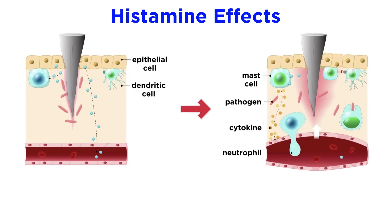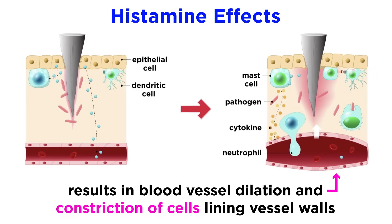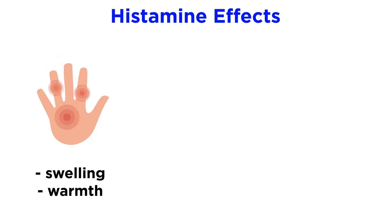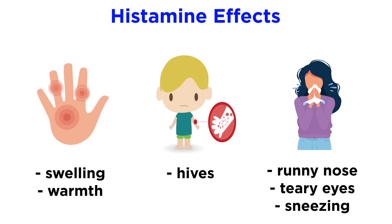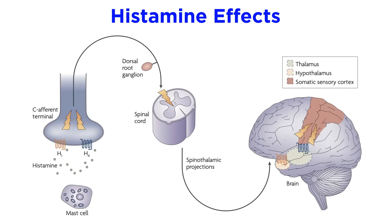Through the H1 receptor, histamine dilates blood vessels and constricts the cells lining these vessel walls, causing increased blood flow to an affected area and allowing immune cells from the blood to escape the vessels and enter inflamed tissues. This can lead to the swelling and sensation of warmth in tissues, the presence of hives in the skin, and can also cause fluid to be expelled in the sinuses, leading to a runny nose, teary eyes, and sneezing. Histamine can also act locally on nerve terminals, causing an itching or painful sensation.